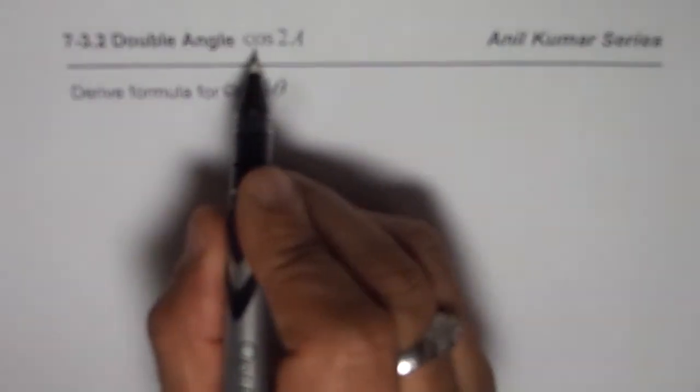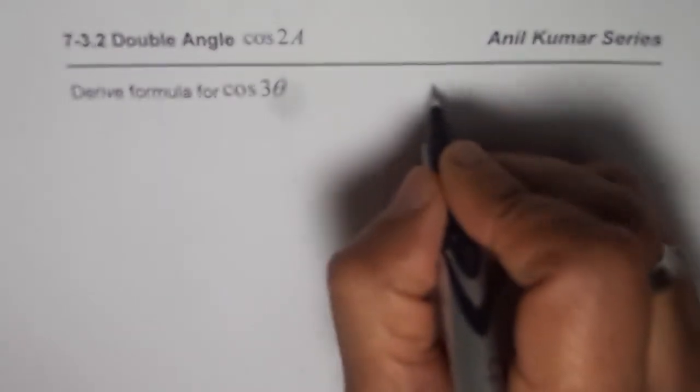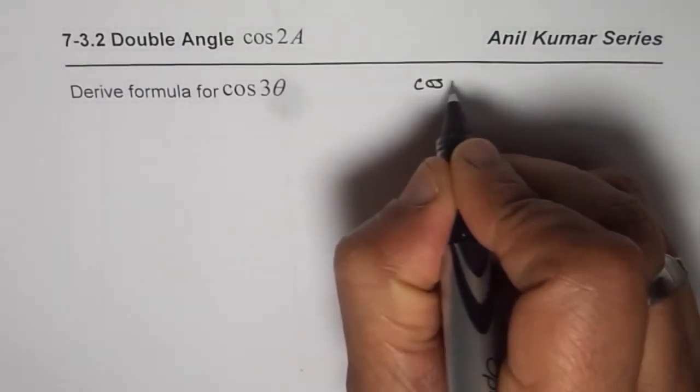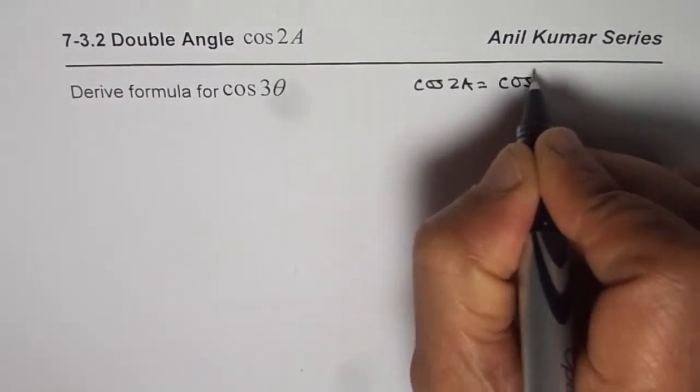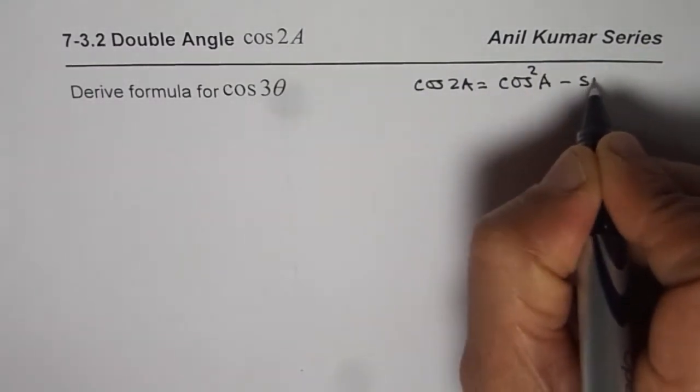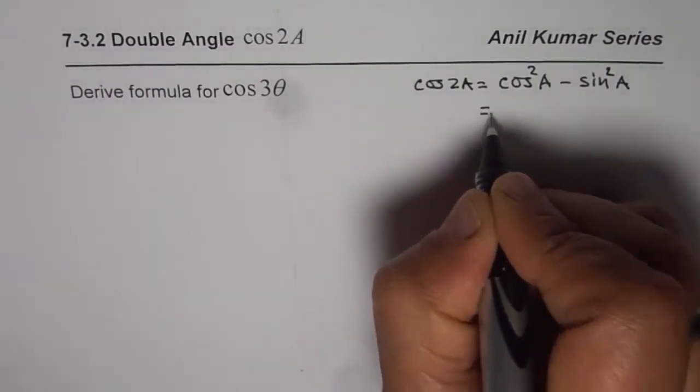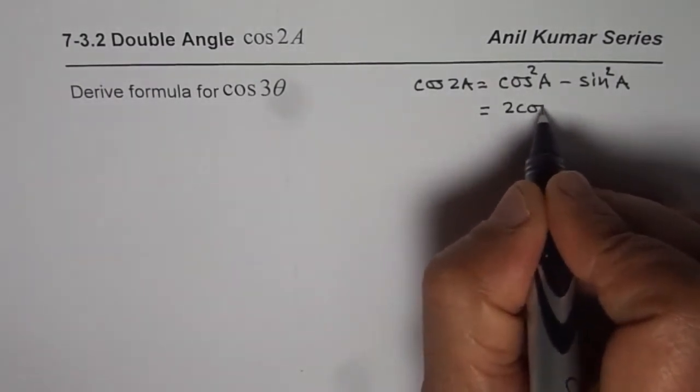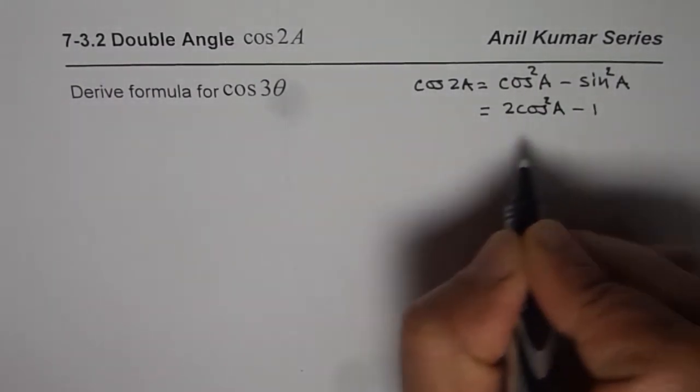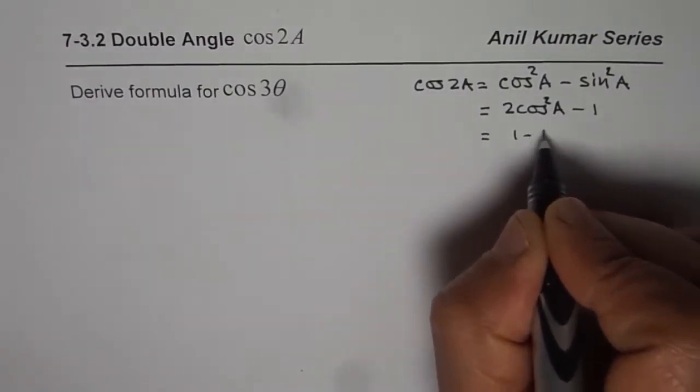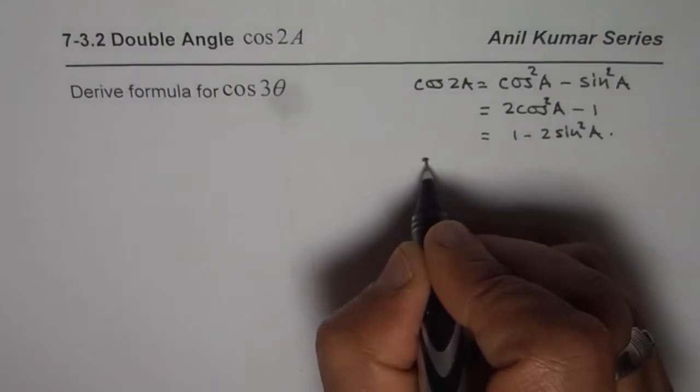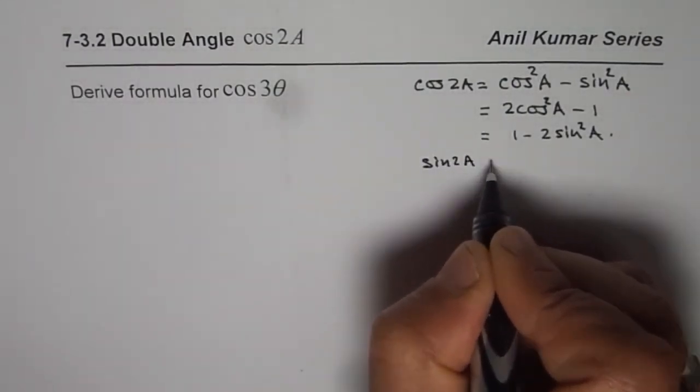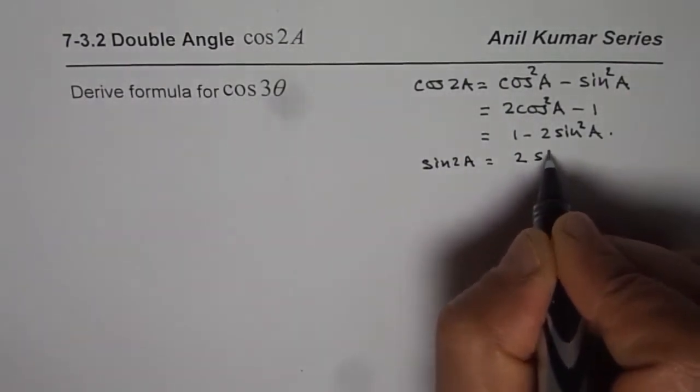We know what cos 2a equals. We can write down here, cos 2a equals cos square a minus sine square a. We could also write this as 2 cos square a minus 1 or 1 minus 2 sine square a. We also learn that sine 2a equals 2 sine a cos a.